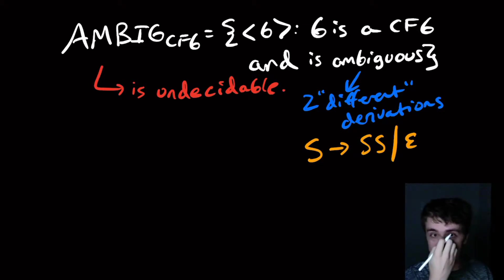The idea is that we want to have two different derivations where one derivation can make a whole set of strings and the other can make a whole set of strings. We want some kind of intersection between those sets. That's kind of the idea behind the Post Correspondence Problem.